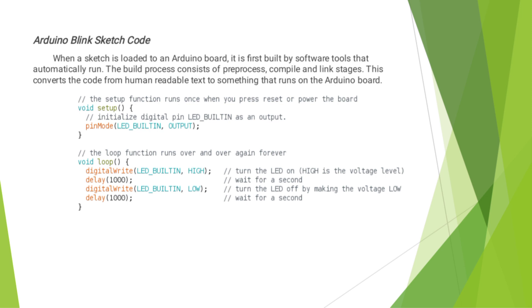This is our sketch for our program. We are given two functions: the first one is void setup, then void loop. In the void setup function, we are given the pin mode, that is LED_BUILTIN and OUTPUT. In void loop, digitalWrite is LED_BUILTIN and the value is HIGH, then delay 1000. Here, HIGH is a voltage level and LOW is also a voltage level. The delay value of 1000 represents one second.